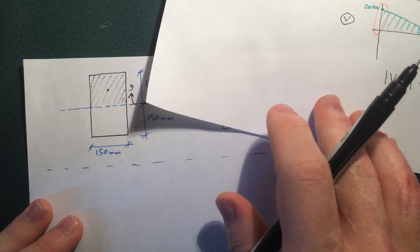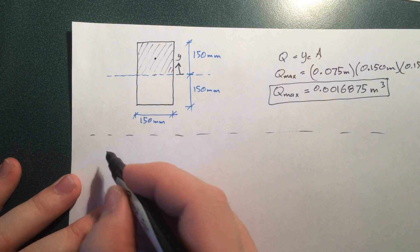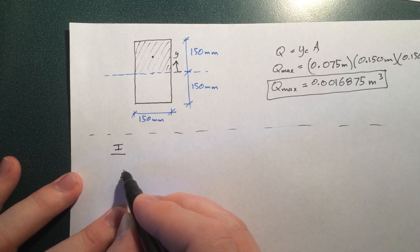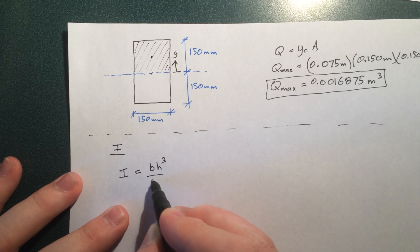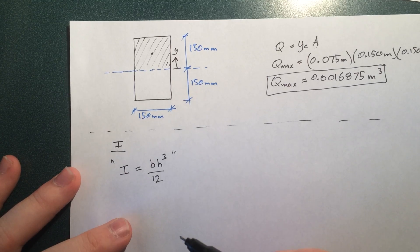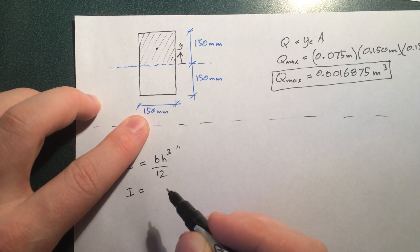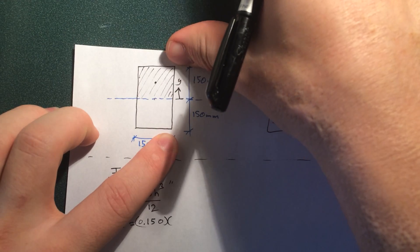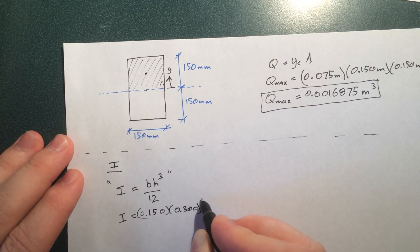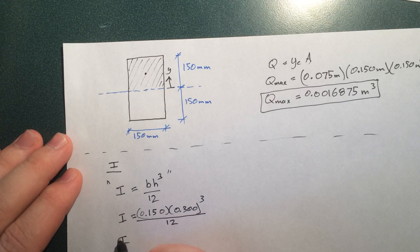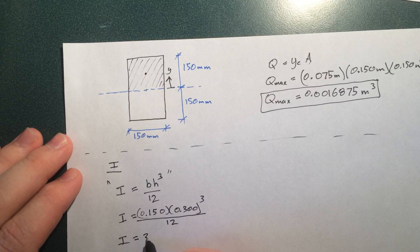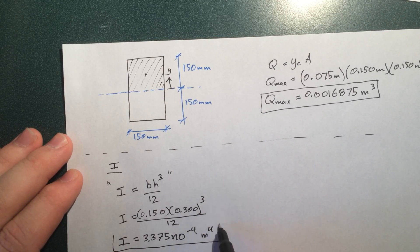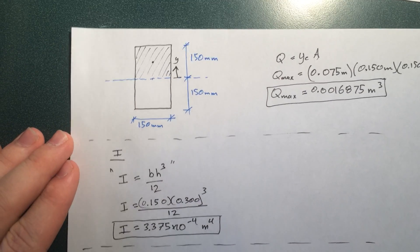We still have a few more variables. We've got V, Q, I is next. That's the moment of inertia. Now, the moment of inertia, that's of the whole cross-section. It's not just of this top piece here. It's of the whole cross-section. And we know that I equals bh cubed over 12. And so, we're just going to go ahead and plug in the values for the situation. I equals 0.0000833 meters to the fourth. So there's one more piece of the puzzle there. That's B.